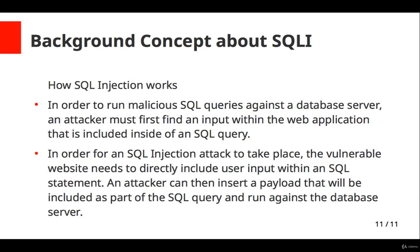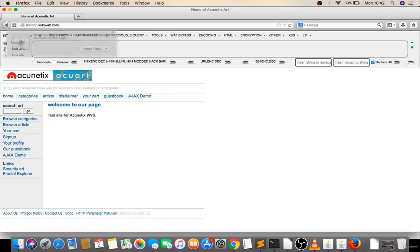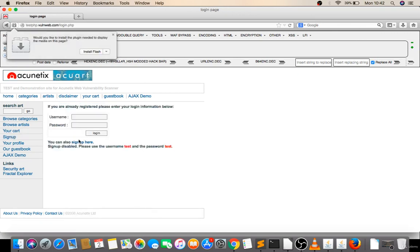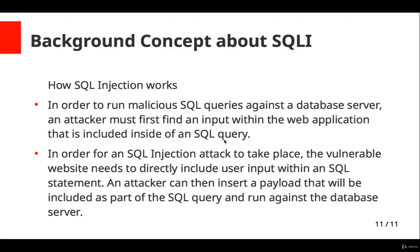So how does SQL injection work? In order to run malicious SQL queries against a database server, an attacker must first find an input within the web application that is included inside of an SQL query. Let's take an example — this is the website testphp.vulnweb.com. You have to find the input parameter. I'm finding an input parameter on the signup page. If I sign up, the data will be stored in their database inside an SQL query. The vulnerable website needs to directly include user input within an SQL statement, and an attacker can then insert a payload that will run against the database server.